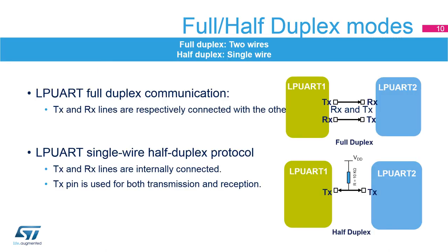The LPUART supports full-duplex communication, where the TX and RX lines are respectively connected with the other interface's RX and TX lines. The LPUART can also be configured for single-wire half-duplex protocol, where the TX and RX lines are internally connected. In this communication mode, only the TX pin is used for both transmission and reception. The TX pin is always released when no data is transmitted; thus it acts as a standard I/O in idle or reception states. For this usage, the I/O must be configured with the TX pin in alternate function open-drain mode with an external pull-up resistor.